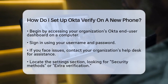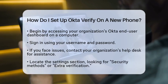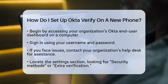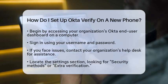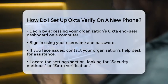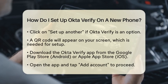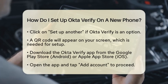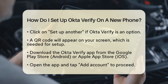Once you are logged in, look for the settings section. You might see options like security methods or extra verification. Click on 'Set up another' if Okta Verify is listed. This action will generate a QR code on your screen, which is essential for the next steps.